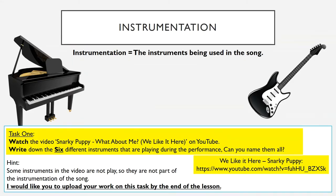For task one, we are looking into instrumentation. Instrumentation is just a word we use for describing the instruments that are being used in a song. So if you're listening to a song and you hear a piano in it and you identify that there's a piano being used, you're identifying the instrumentation of the song. For task one, I'd like you to watch the video — Snarky Puppy, What About Me, We Like It Here — on YouTube.